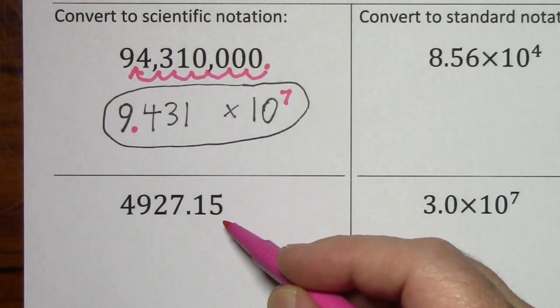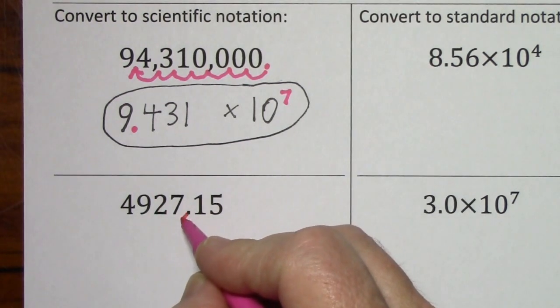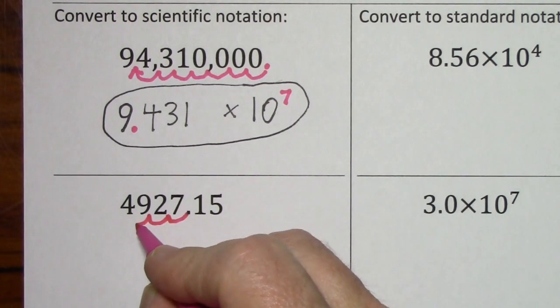Looking at our next example, if we want to write this number in scientific notation, there's already a decimal sitting here, but we'll have to move it one, two, three, five places.